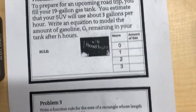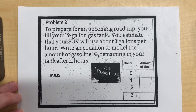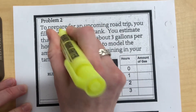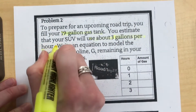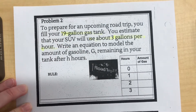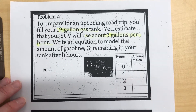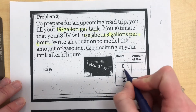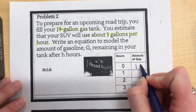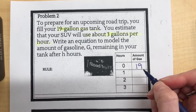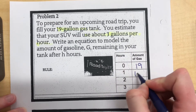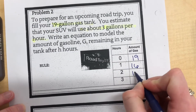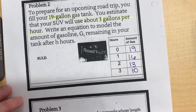The next problem: to prepare for an upcoming road trip, you fill your 19-gallon gas tank — that's very important information. You estimate that your SUV will use about 3 gallons per hour. Again, we have a table to make it helpful. At 0 hours, I haven't gone anywhere and have a full gas tank, so I have 19. After 1 hour, I've used 3 gallons, so I'm at 16.